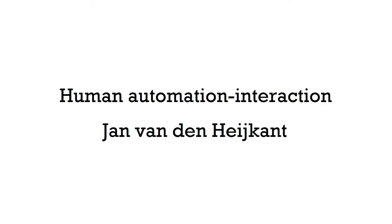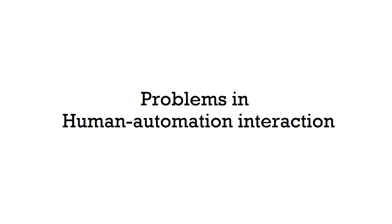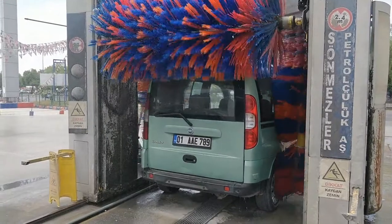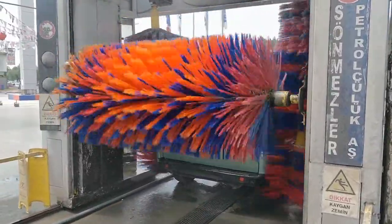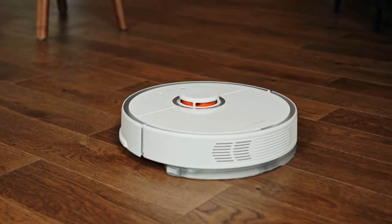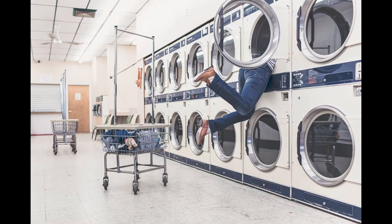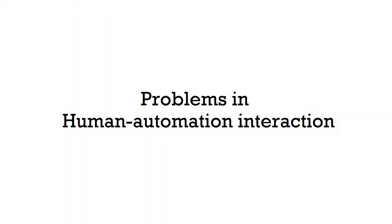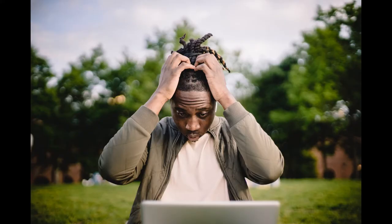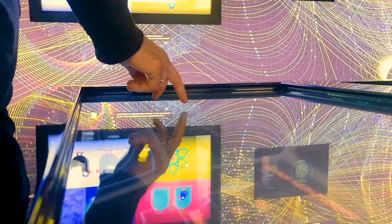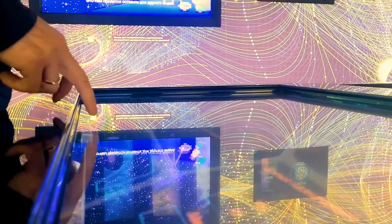Hi, my name is Jan and in this short video I would like to talk about some of the issues that will arise as a result of the growing application of automated systems. Automated systems are useful for a wide variety of tasks, but sometimes they can create new problems. These problems are not necessarily caused by the automated system itself or by the human operator, but rather through the interaction between the two.